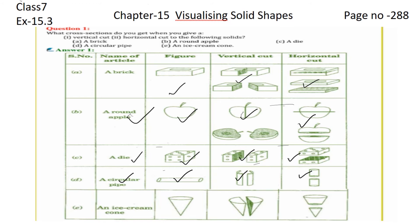The last one is an ice cream cube. This is the vertical cut in the ice cream cube and this one is the horizontal cut in the ice cream cube.